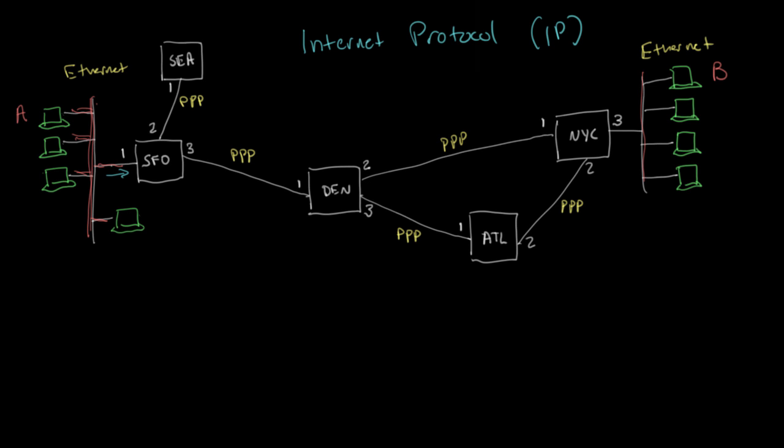So the addresses we normally use for IP are 32 bits long. And there's also IP version 6, which uses 128-bit addresses. But the internet is still predominantly using version 4, which uses the 32-bit addresses.